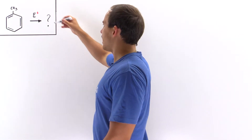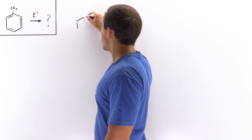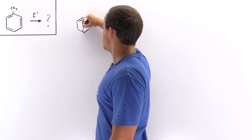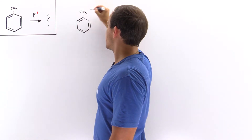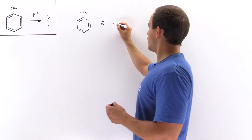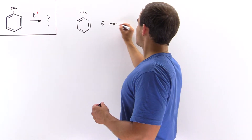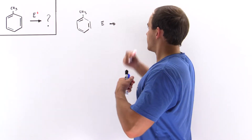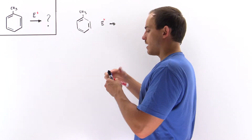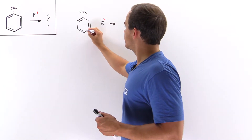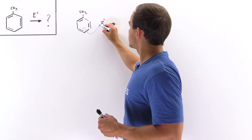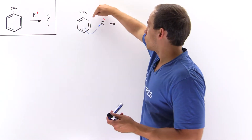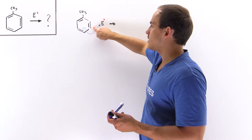Let's begin with our molecule toluene. We have our benzene molecule with its pi bonds and we also have this methyl group. The electrophile reacts to produce a resonance-stabilized structure using arrow formalism — the positive charge on the electrophile is grabbed by the ring. The para position is the fourth position, the ortho position is the second position, and the meta is the third position.